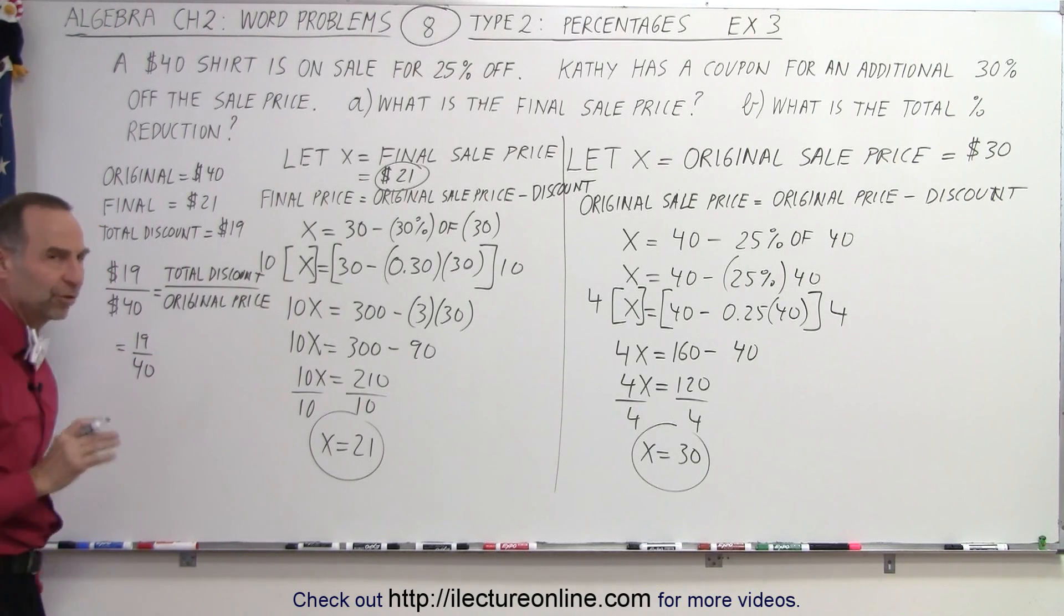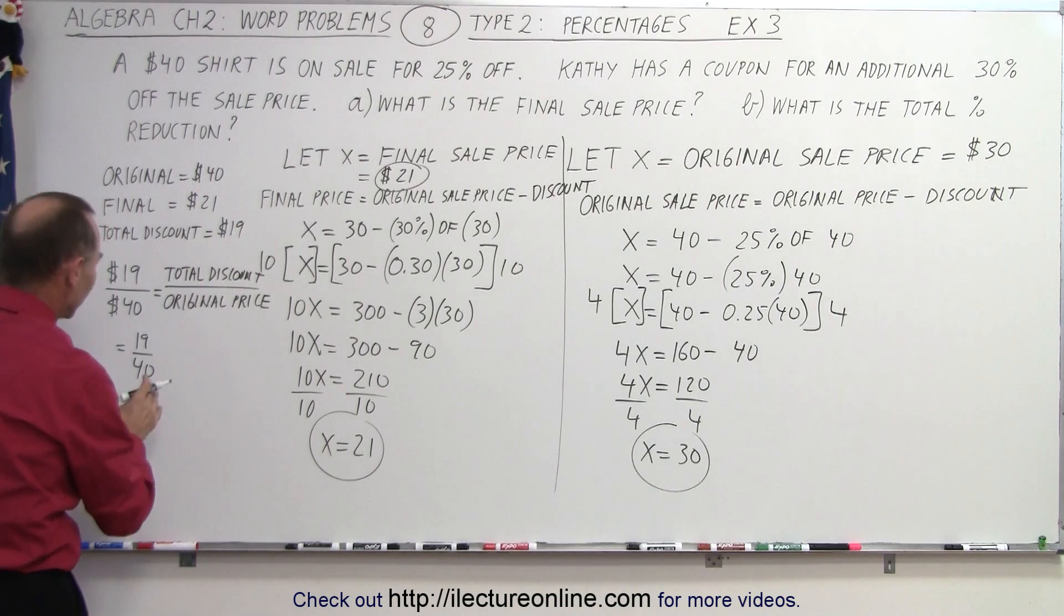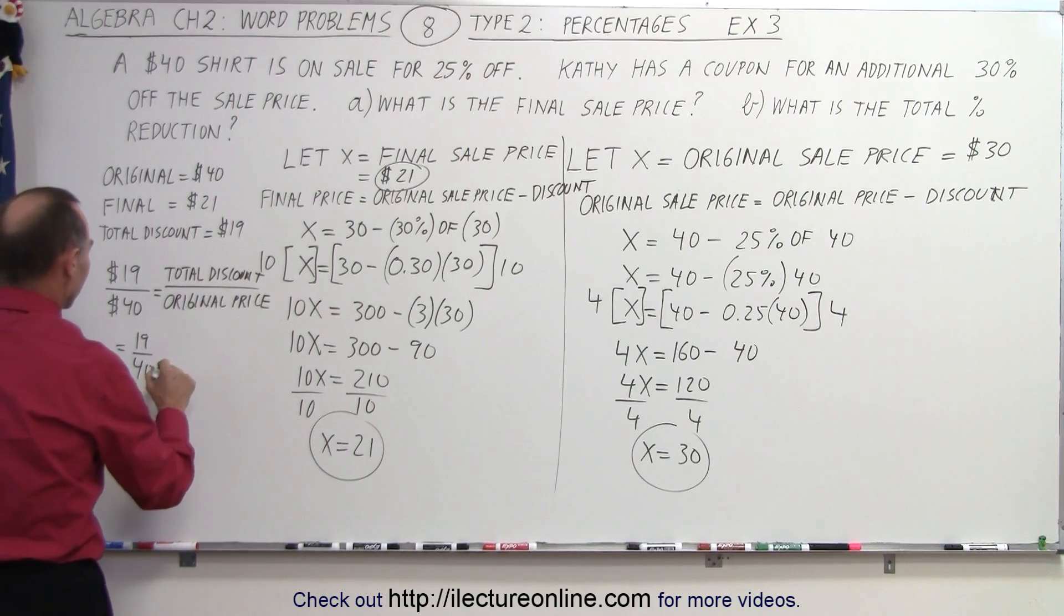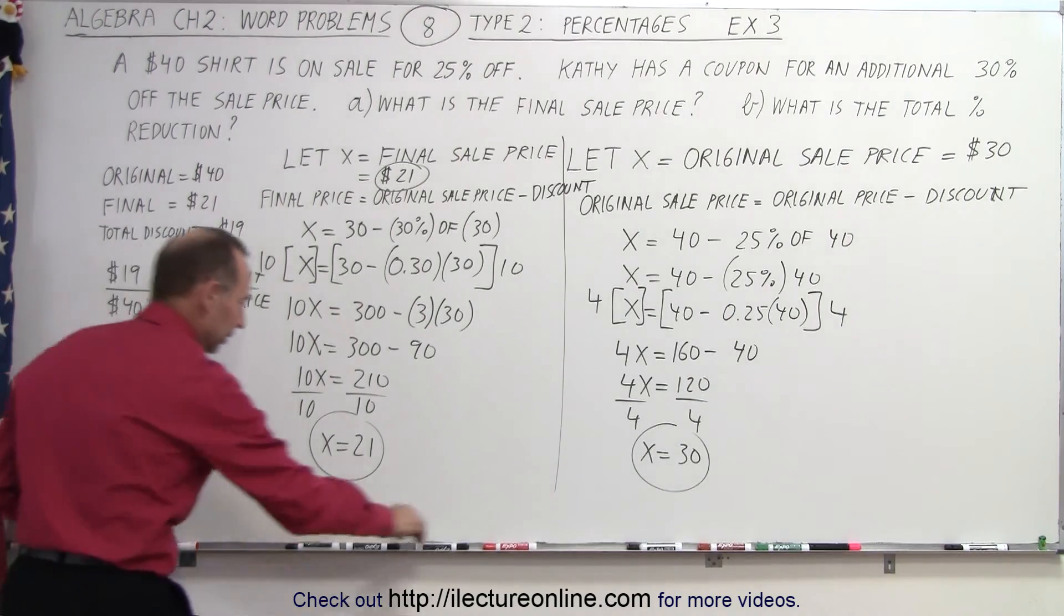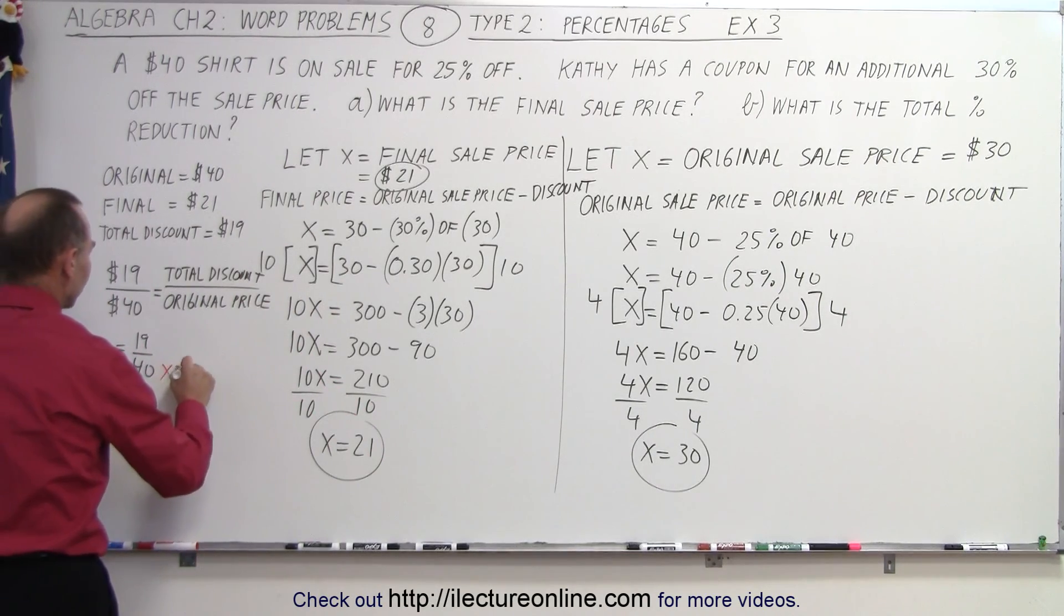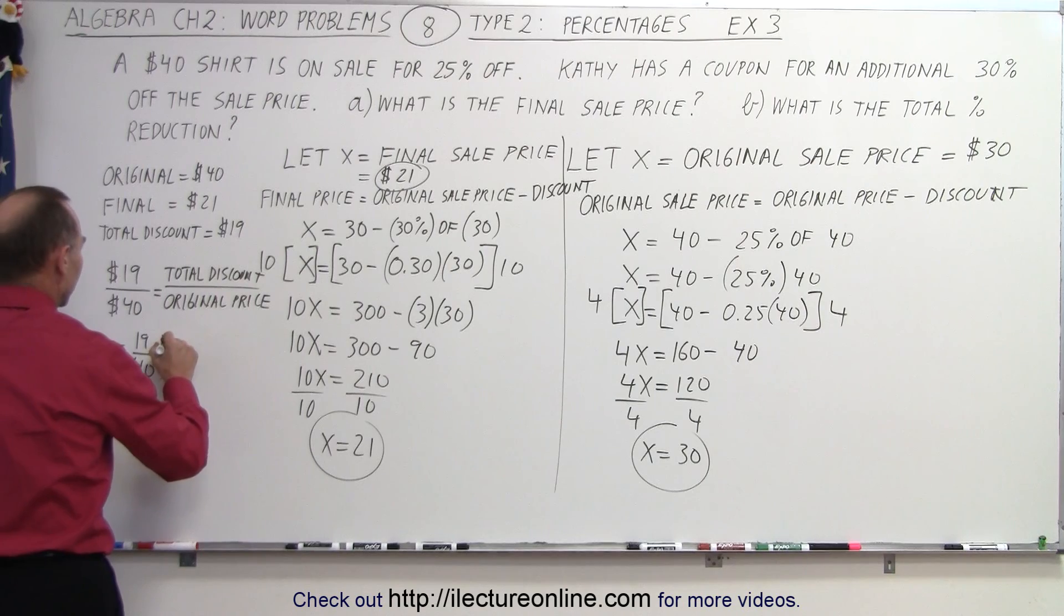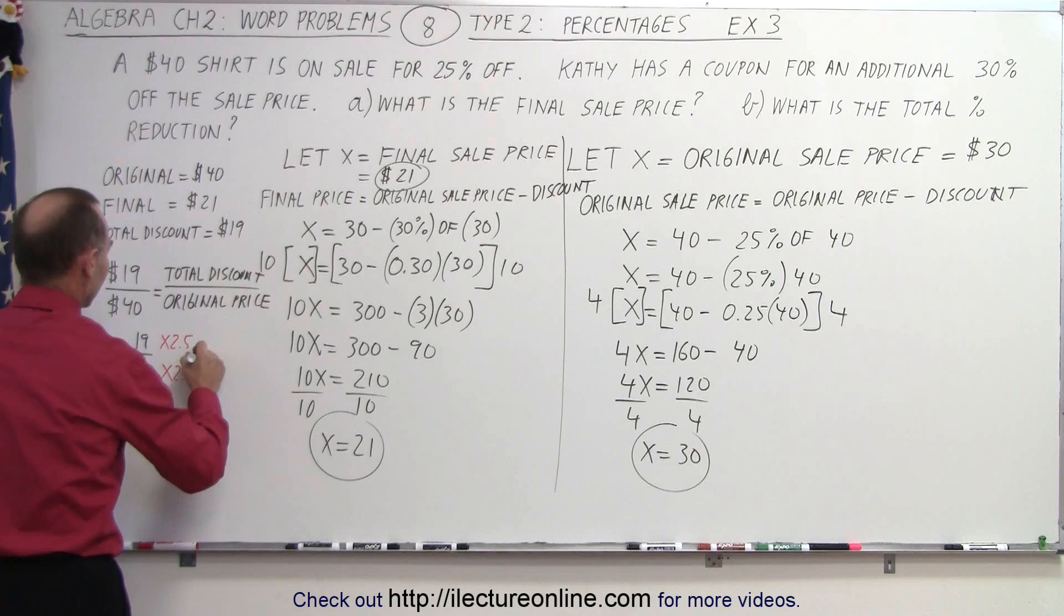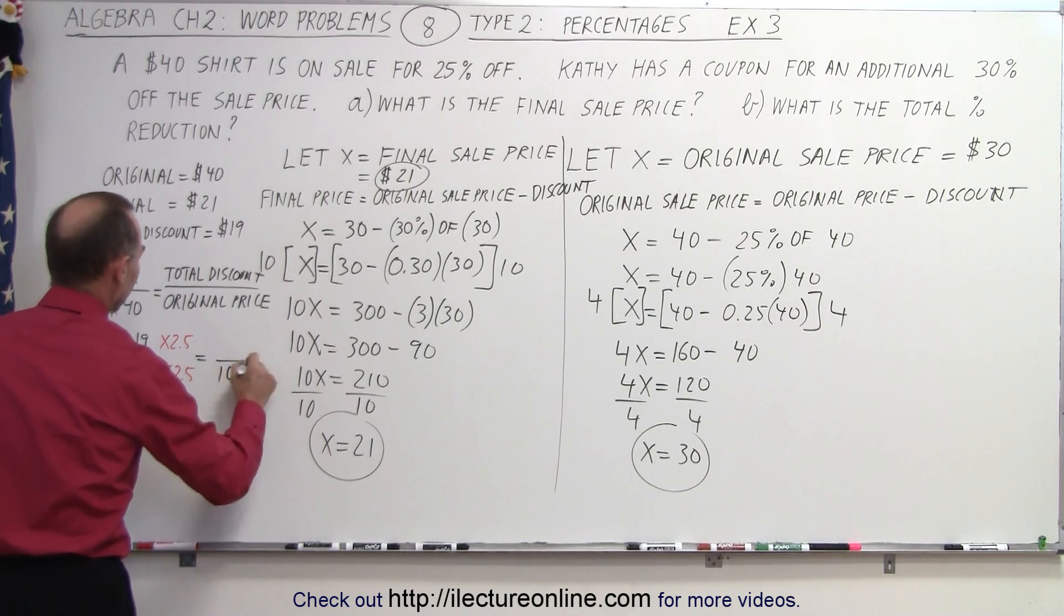So how do you turn that into a percent? Well, percent should always be over 100. So if you can see here the denominator 40, if we want to multiply that times 2.5, that gives us 100. So what we're going to do here is multiply the denominator by 2.5. And of course, we must do the same to the numerator, 2.5.